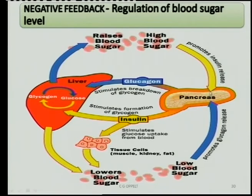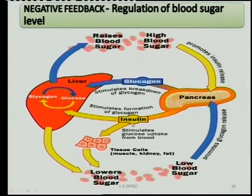A high blood sugar level will stimulate certain cells within the pancreas to produce and secrete more insulin. Insulin's very important function is to lower that high blood sugar level. It does this by converting glucose into glycogen, which is then stored within the liver cells and muscle cells. The yellow in the diagram indicates when the blood sugar level is too high.